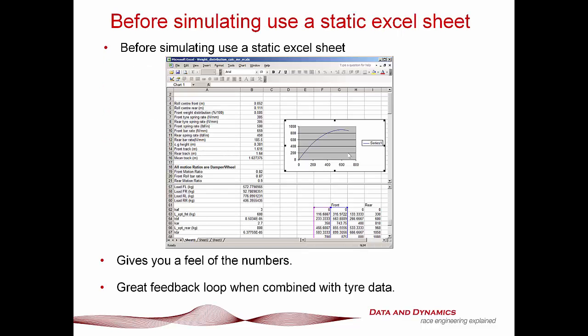Before simulating, one thing I'd really encourage you to do is use a static Excel force balance sheet. It's a typical internal tool — nothing fancy — but it's functional. You put in your front and rear roll centres, weight distributions, CG heights, tyre spring rates, spring rates, bar rates, motion ratios, corner curvature, and tyre model, and it'll give you some predicted cornering speeds. The beauty of something like this is it gives you a feel for the numbers. Combined with tools like the ChassisSim tyre force modelling toolbox and actual tyre data, it provides a great feedback loop.